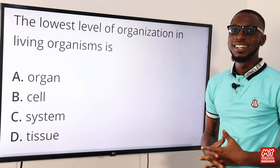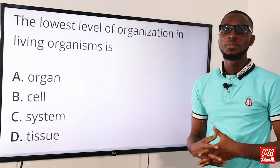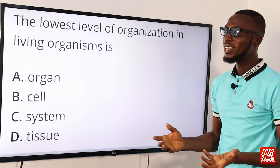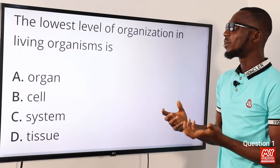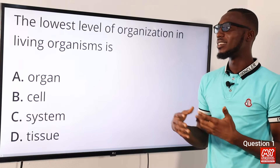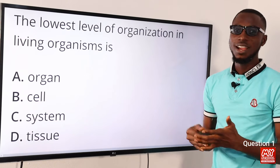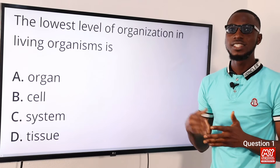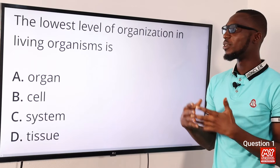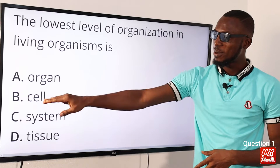Welcome back to my school channel. In this video segment, we are solving questions 1 to 25. Let's begin with question one: the lowest level of organization in living organisms is what? We have cell, tissue, organ, and system — so the lowest of these is the cell. Option B is the correct option.